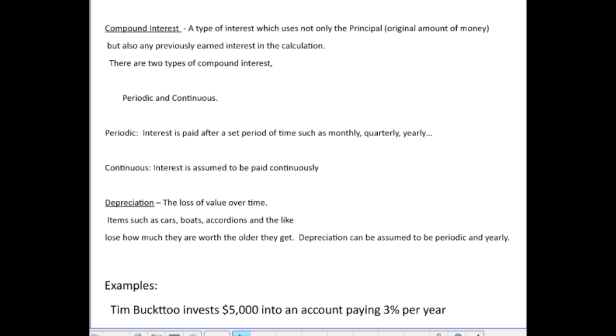Now, there are two types of compound interest. There's something called periodic and continuous. Periodic is where they pay you your interest after a set period of time, such as monthly, which would be 12 times a year, quarterly, which would be four times a year, or just yearly, which would be like once a year. What would you say if I said daily? What if they paid you your interest daily? Now, continuous interest is where we assume that you paid your interest constantly. They're not doing it periodically. They're constantly paying your interest. That's another type, and that's why you have a different formula.